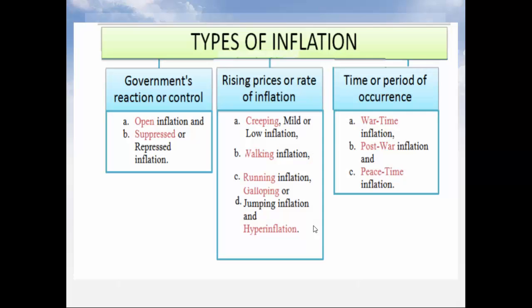Now let's move on to the types of inflation. Inflation can be categorized on a lot of bases: one is the government's reaction or control, another is according to the rate of inflation, the next one is time or period of occurrence. There is also cost push inflation and demand pull inflation, which is not included in the flow chart. Let's look at the types of inflation in detail.